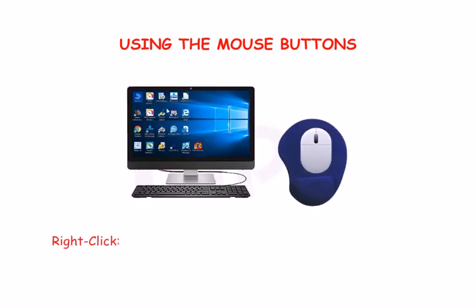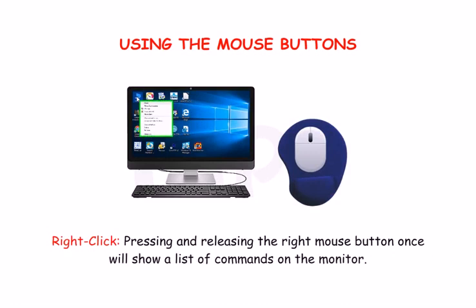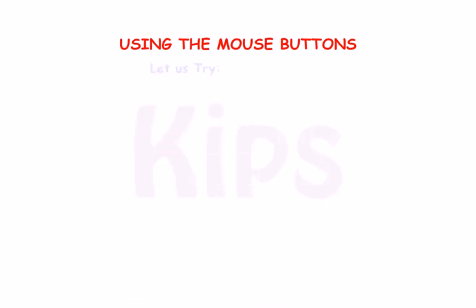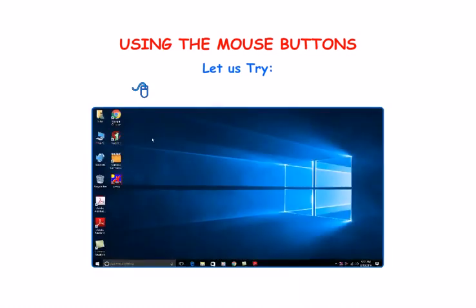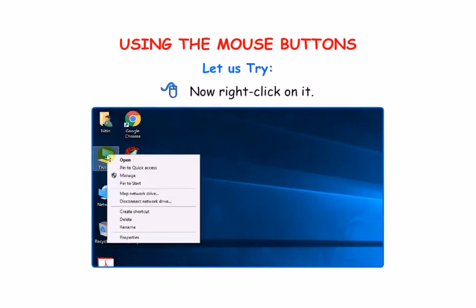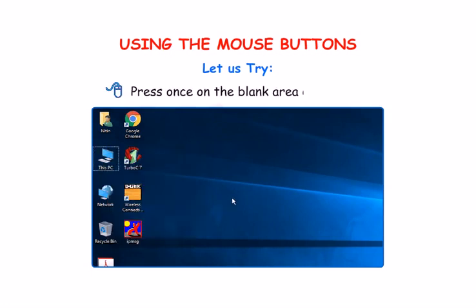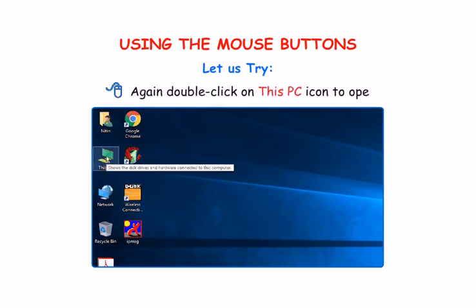Right click. Pressing and releasing the right mouse button once will show a list of commands on the monitor. Let us try. Place your palm on this PC icon and right click on it. The list of options will appear. Press once on the blank area of the desktop. Again double click on this PC icon to open it.